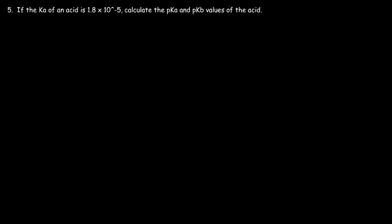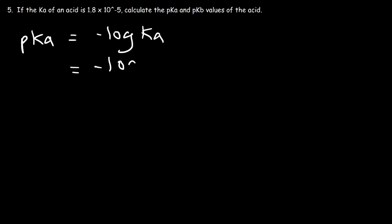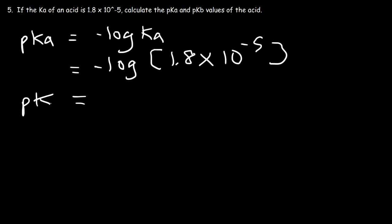Number 5. If the Ka of an acid is 1.8 times 10 to the minus 5, calculate the pKa and pKb values of the acid. Starting with pKa: it's the negative log of the Ka value, just as pH is the negative log of H+ or H3O+. So this is negative log of 1.8 times 10 to the minus 5. Looking at this number, the pKa has to be somewhere between 4 and 5, and it turns out the pKa is 4.745.